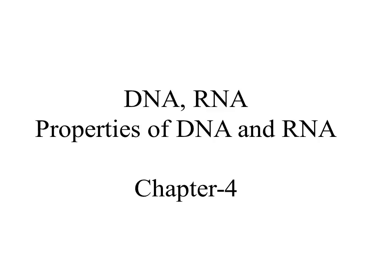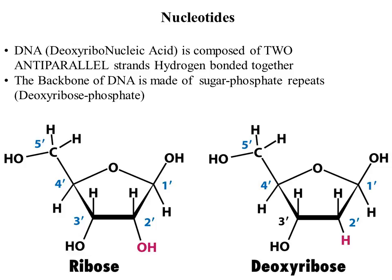DNA, which really should be the beginning because from DNA comes protein, but we figured that protein would be a good middle ground to make it easier to transition to DNA. So nucleic acids — DNA and RNA — and that will be mostly from chapter 4.